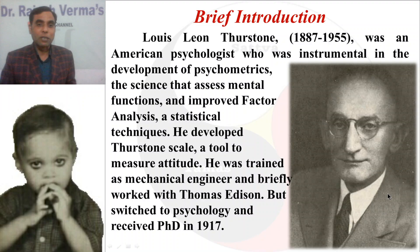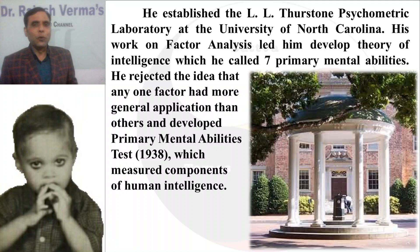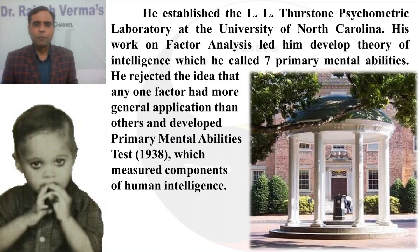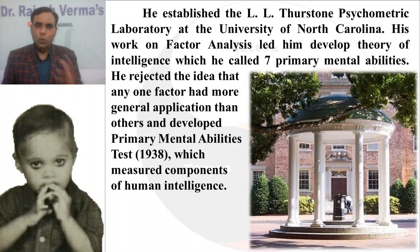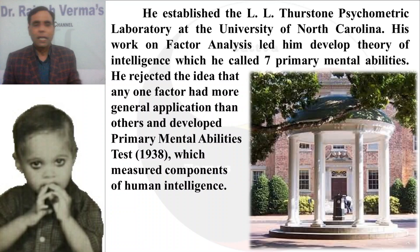He switched to psychology and subsequently earned his PhD in 1917. The image in front of you is the L.L. Thurston Psychometric Laboratory at the University of North Carolina, which he established. His work on factor analysis led him to develop a theory of mental intelligence, which he called the theory of several primary mental abilities. Through that technique, he reduced intelligence dimensions to seven primary mental capacities.